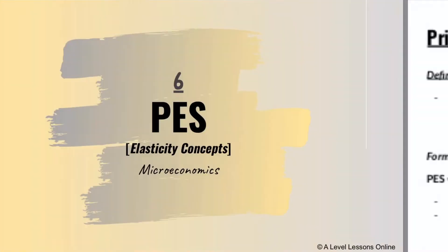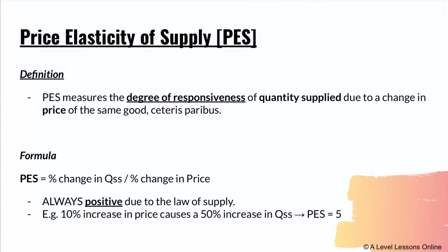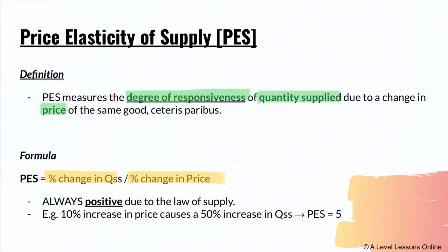The definition of PES is similar to PED, just the opposite. PES measures the degree of responsiveness of quantity supplied due to a change in the price of the same good. The formula is: percentage change in quantity supplied divided by percentage change in price. It is always a positive number because of the law of supply, which states there is a direct relationship between price and quantity supplied.